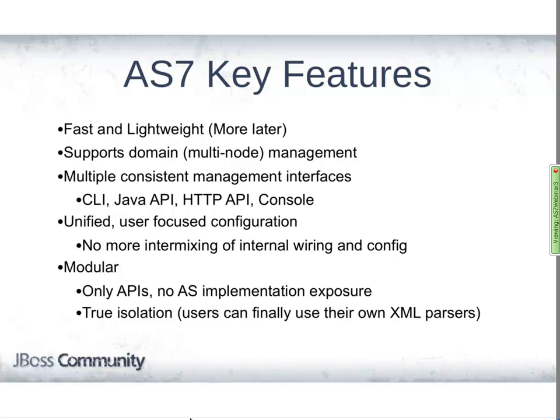We have a number of interfaces into the management infrastructure: a command line interface, a native Java API, JSON over HTTP (which would allow something like a Perl script to talk to the management system), and a web-based console. We also have what we call unified user-focused configuration. In the past, JBoss configuration files showed not just your configuration parameters but also the server's internal wiring details. Now we have a global rule: if something is in our configuration file, it must be something the user declares, not something we use internally.